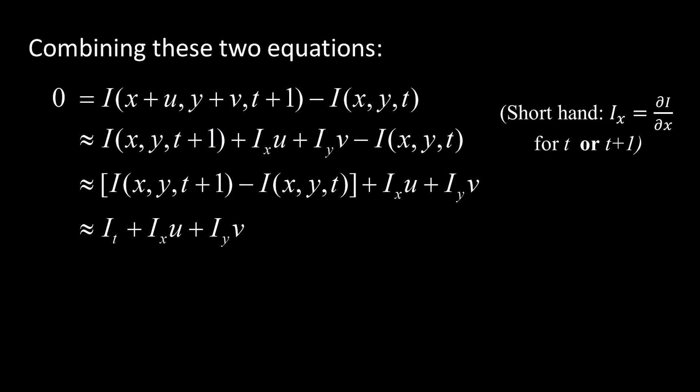And then finally, on this last one, you'll see that this here is just i x times u plus i y times v. That's just the gradient, i x, i y, dotted with however the point is moving, that's u v. So we write that like this, that zero is approximately i t plus the gradient of the image, dotted with this vector u v. u v is the direction of motion. Got it?